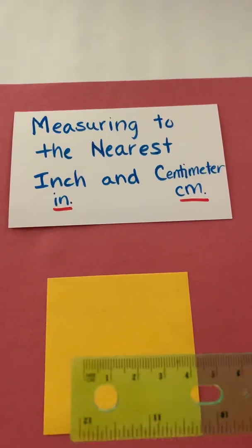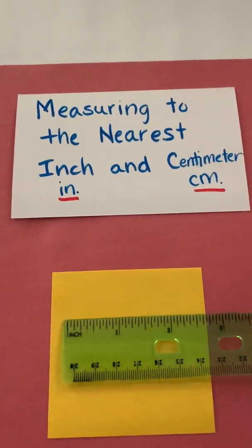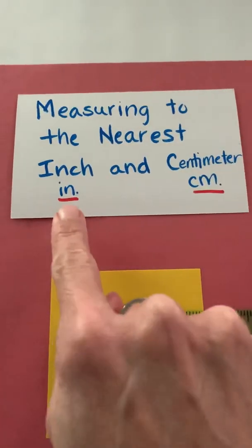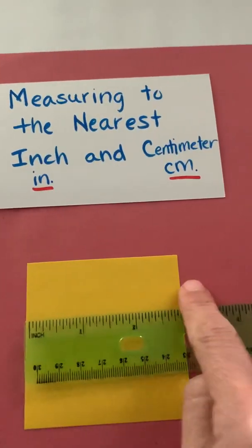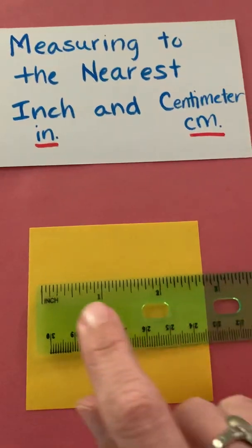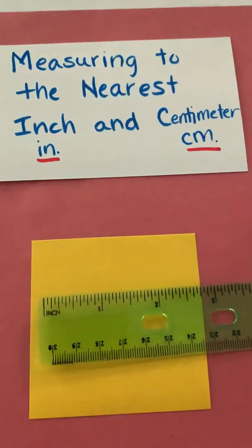So one of the things when we're measuring with rulers is that we want to make sure that we start at the correct side. So if we're going to measure in inches and we're going to find out the width of this sticky note, then I want to make sure I'm on the inches side, and I can check that and make sure yes that's inches.